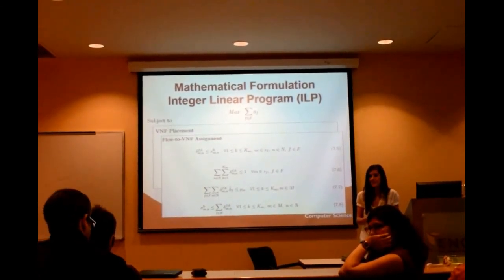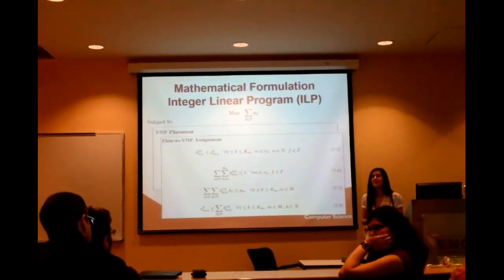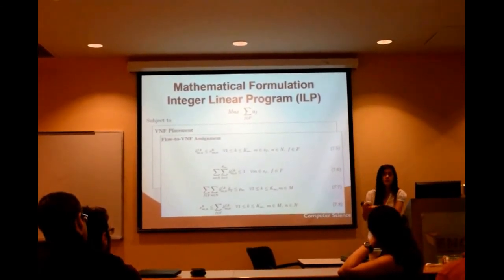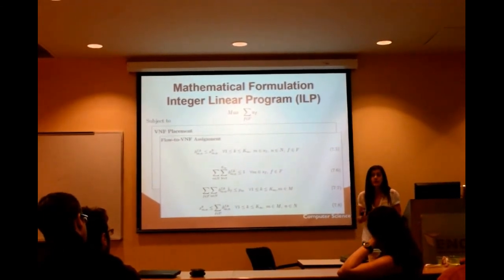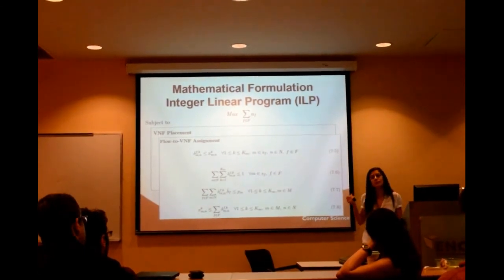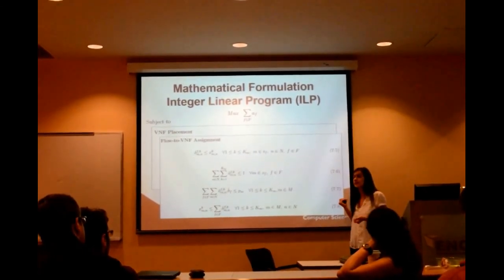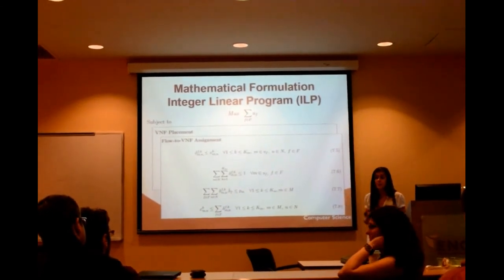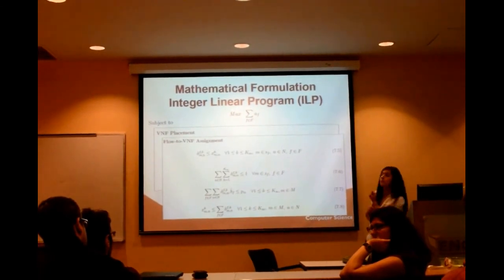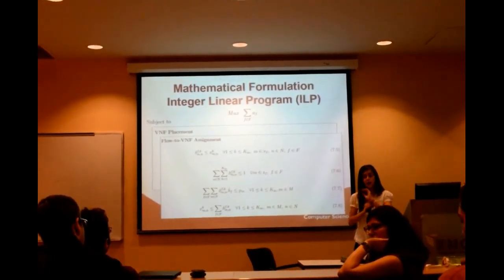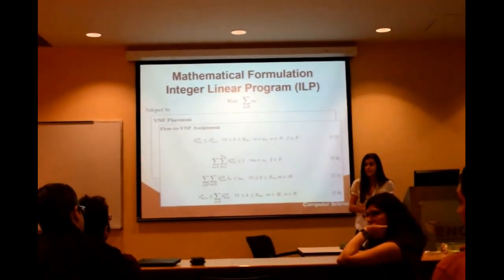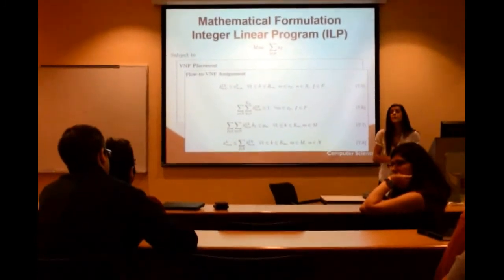We are aware of existing work and that most existing approaches are based on heuristics. When it's a heuristic, it does not guarantee the quality of the solution provided. We solve the problem with optimality, and our method is approximately 700 times faster than the ILP. The metric we optimize is maximizing the number of flows admitted under the constraints — it is essentially a resource optimization problem.